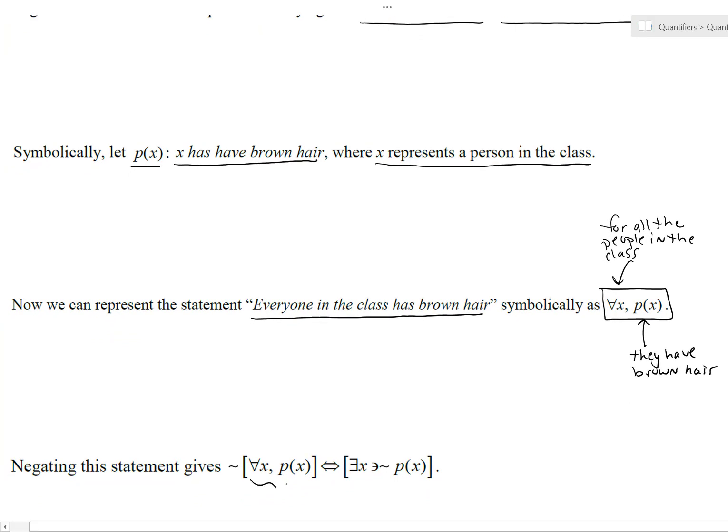And then we could talk about truth value. But also we could negate this statement as follows. Here's the statement: for all the people in the class, they got brown hair. Everybody in the class got brown hair. Negate that. And like we said before, that's like saying there exists at least one person in the class that does not have brown hair. There exists a person in the class such that they don't have brown hair.